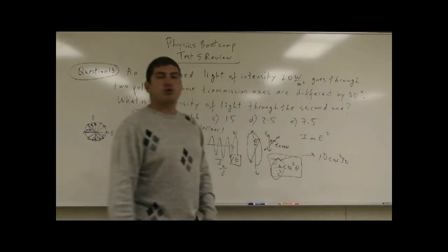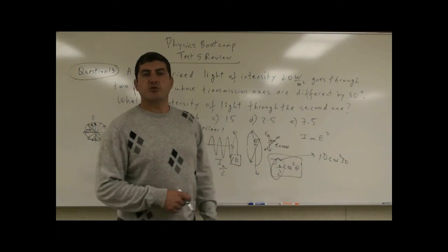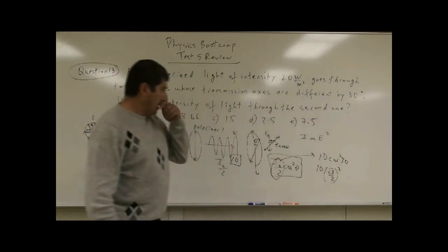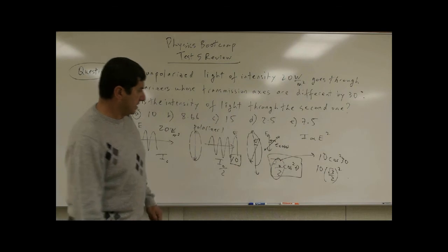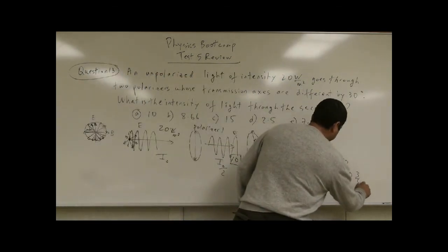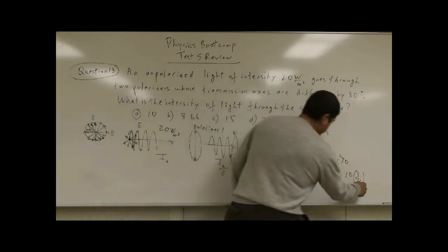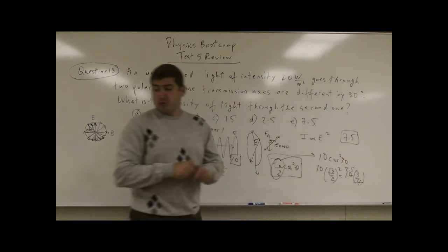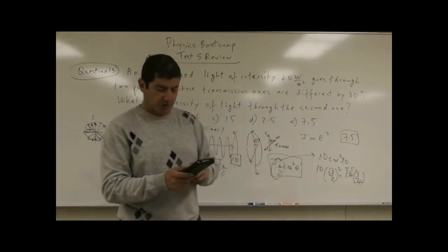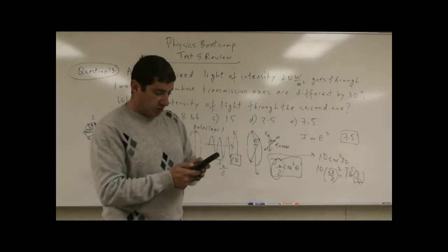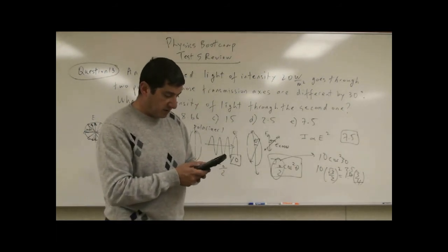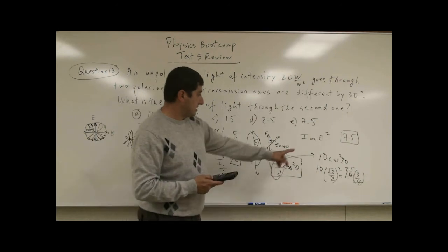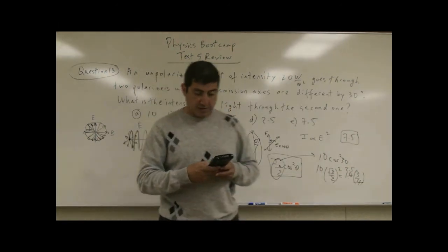Cosine of 30 degrees is √3 over 2. Squaring that gives 3 over 4. So the final intensity is 10 times 3/4, which equals 7.5 watts per meter squared. You could also verify this with a calculator: cosine squared of 30 multiplied by 10 gives 7.5.